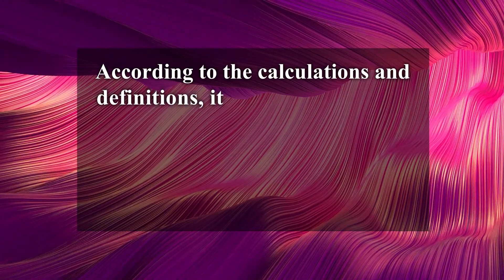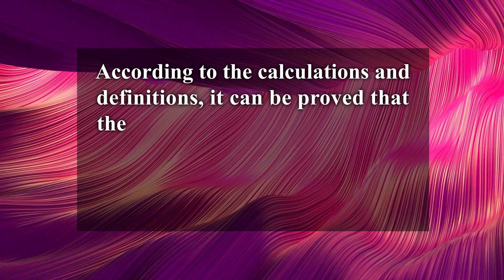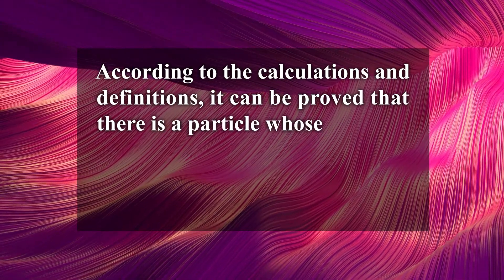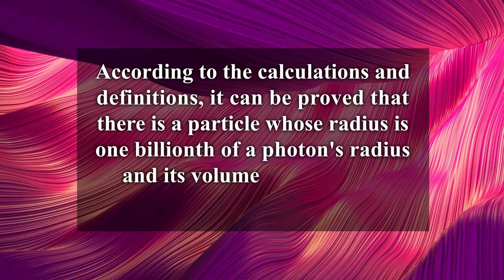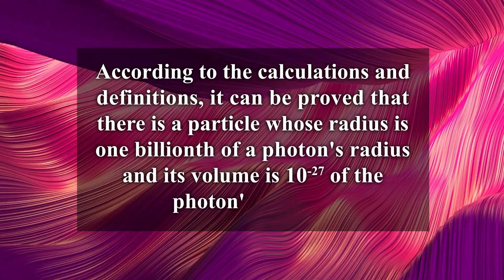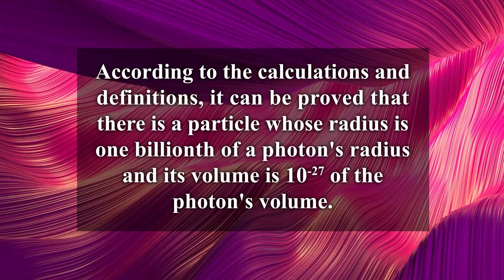According to the calculations and definitions, it can be proved that there is a particle whose radius is one-billionth of a photon's radius and its volume is 10 to the power of minus 27 meter of the photon's volume.